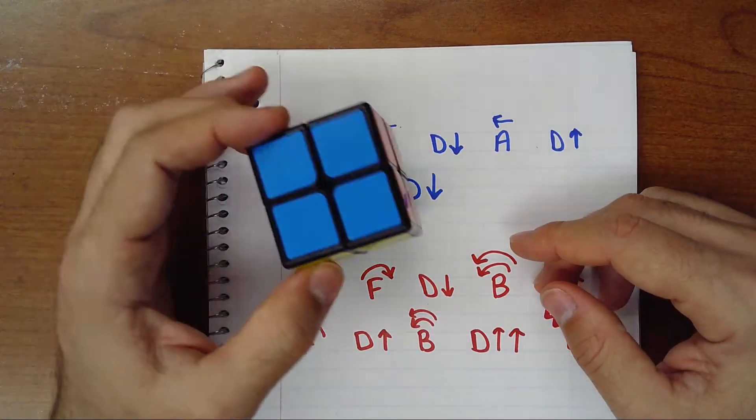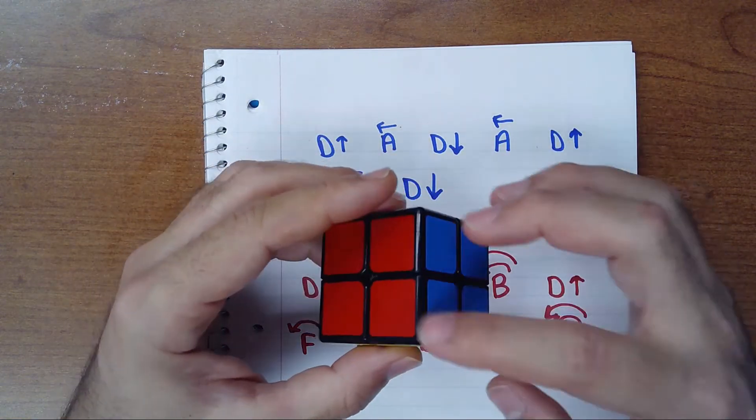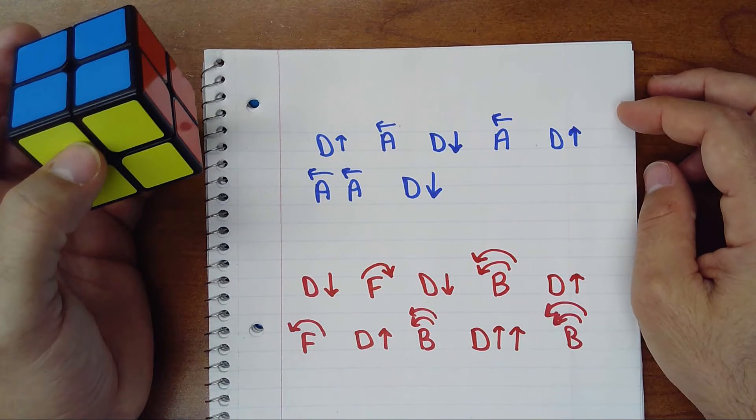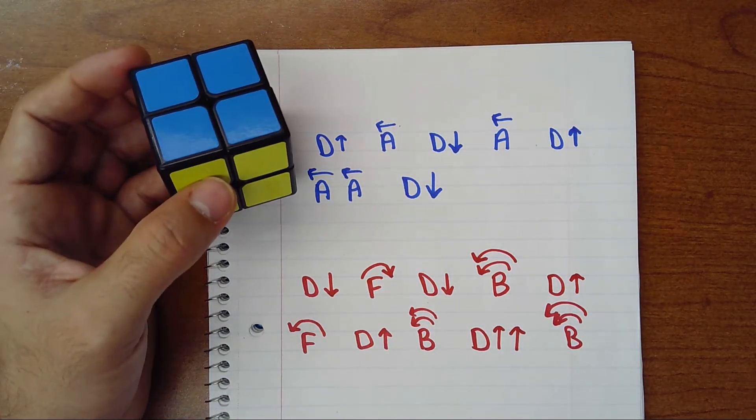You have to know how to do one face with the ring. If you do that and memorize those two, you're good to go. Thank you for watching and hope this helps you solve the two by two.